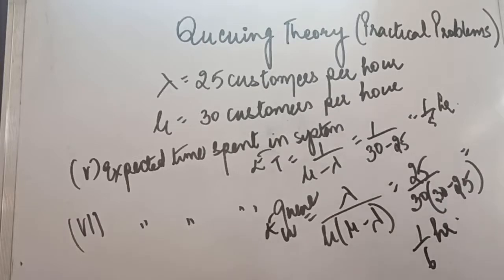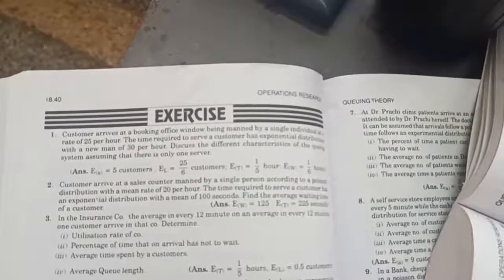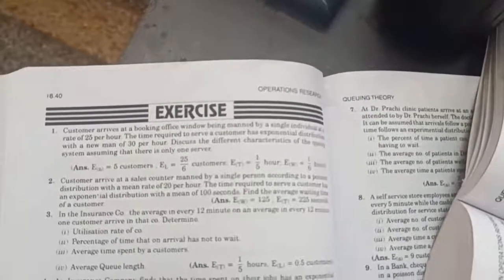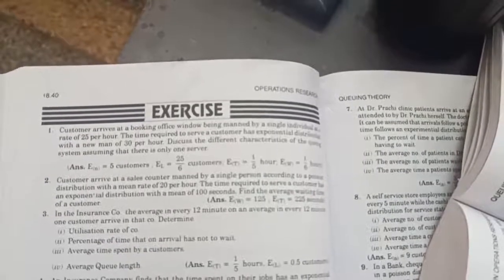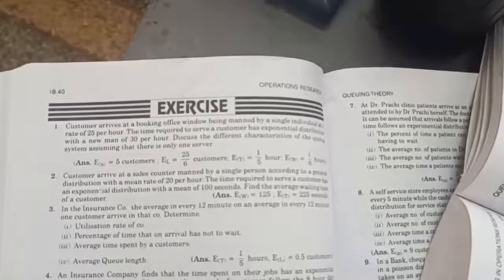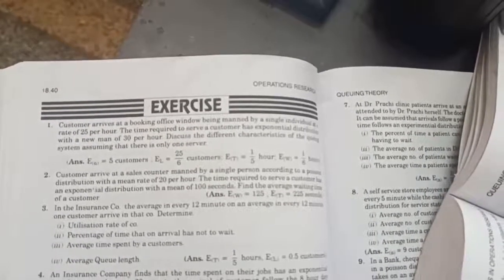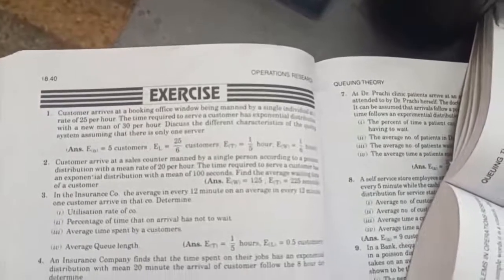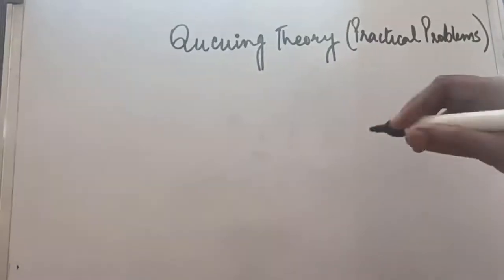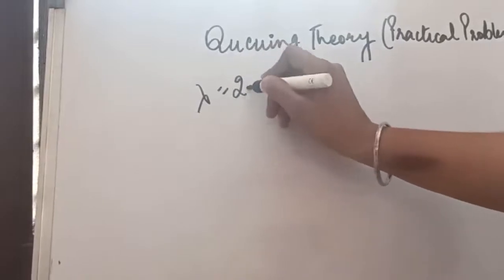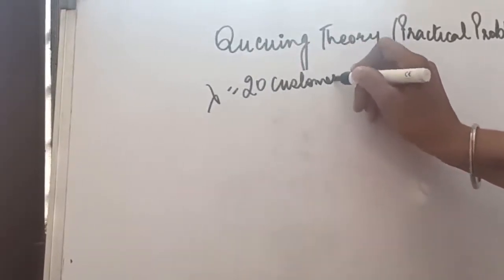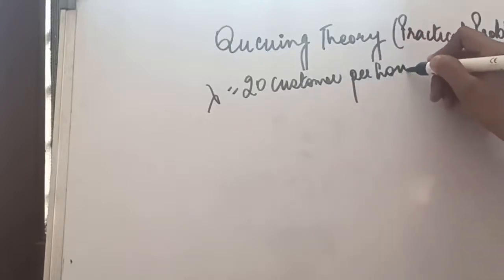That is how a simple queuing theory question is solved. In question number 2, customers arrive at a sales counter manned by a single person according to a Poisson distribution with a mean rate of 20 per hour. The time required to serve a customer has an exponential distribution with a mean of 100 seconds. We have to find the average waiting times, so lambda is 20 customers per hour.